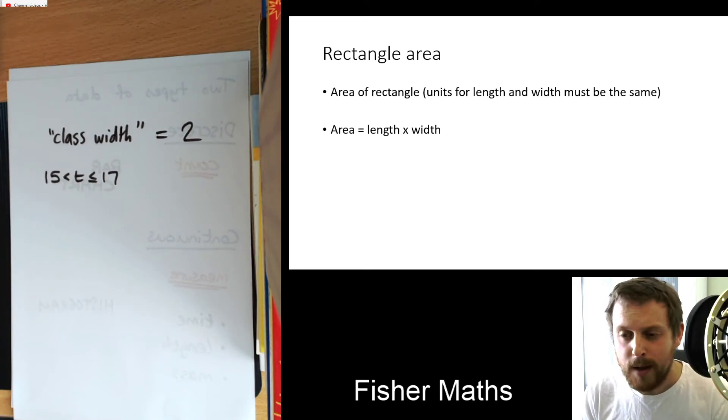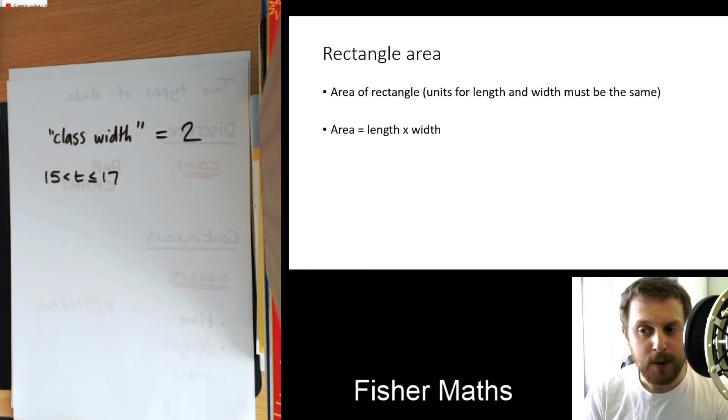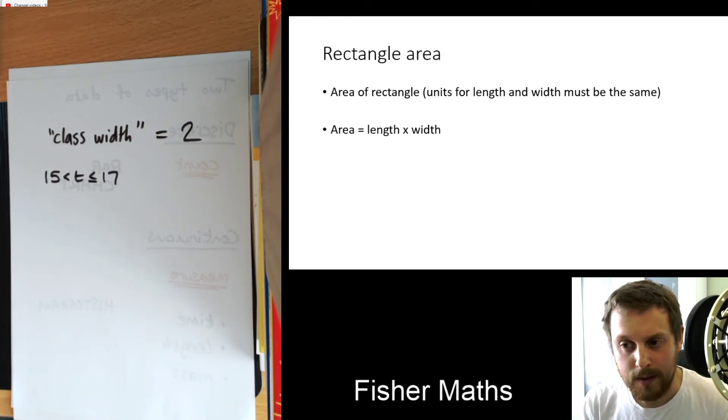Right. Finally, area of a rectangle. So remember, if the units for the width and for the length are different, you want to make them the same. So you want them both to be in centimeters, or you want them both to be in meters. And so what we're going to do is we're just going to assume that both the units are the same, which means I don't really need to say what they are in this situation. So I'm just going to pretend they're both in centimeters. So I could pretend they're both in meters.